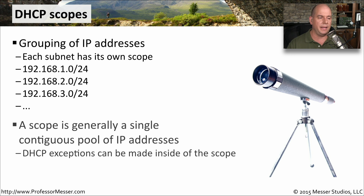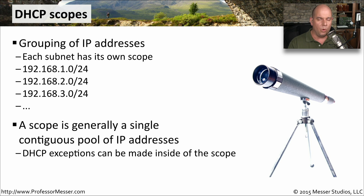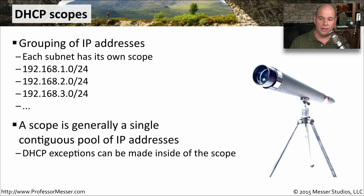The scope is generally a single, contiguous pool of addresses — from one to a certain number and everything in between. If you need to make any exceptions to the DHCP scope, you can do that right in the DHCP server.